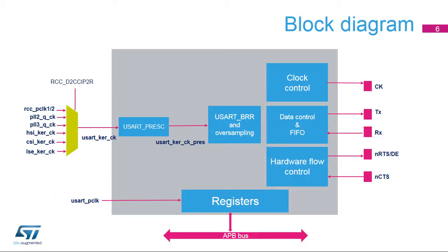This is the USART block diagram. The USART clock source, USART-KERCK, can be selected from several sources: the peripheral clock or APB clock, the PLL-2Q, the PLL-3Q, the high-speed internal RC oscillator, the low-power internal oscillator CSI, or the low-power external 32.768 kHz crystal oscillator. The USART clock source can be divided by a programmable factor in the USART pre-SC register.